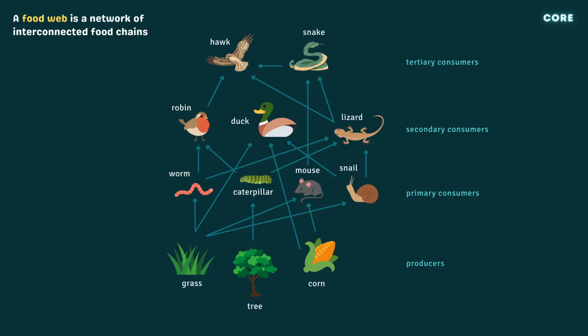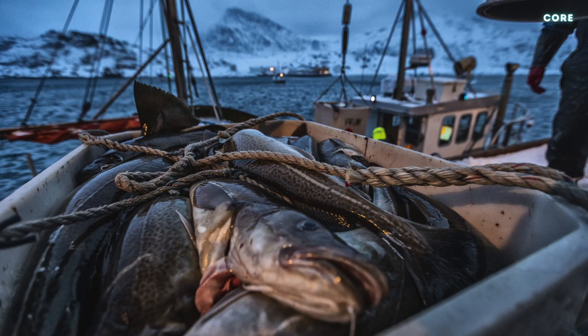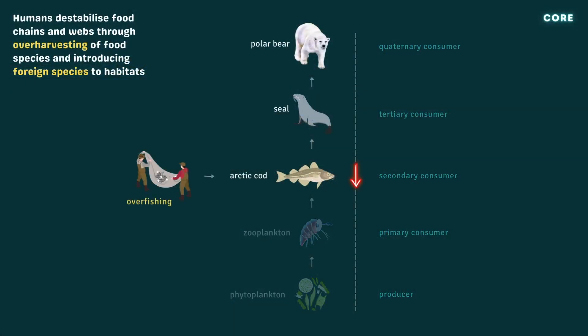Since all the plants and animals in a food web are connected in some way, changes to the population of one organism will have knock-on effects elsewhere. This can be demonstrated by looking at the impact of human activities like over-harvesting and the introduction of new species to habitats. For example, over-harvesting of food species like arctic cod reduces the amount of food available to seals, affecting their population, which could in turn cause polar bear numbers to decline.